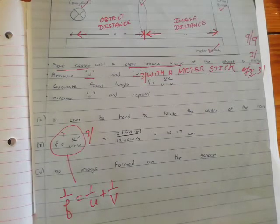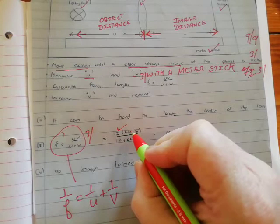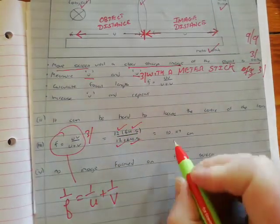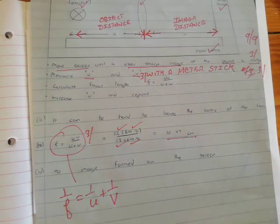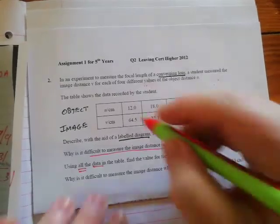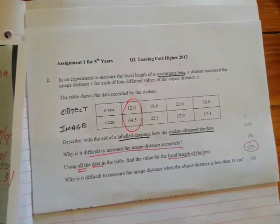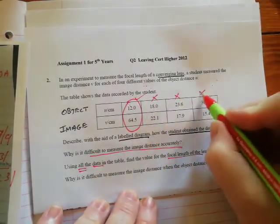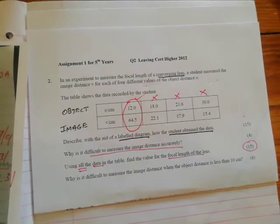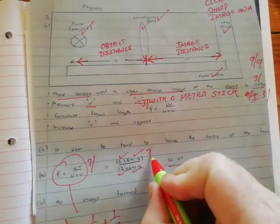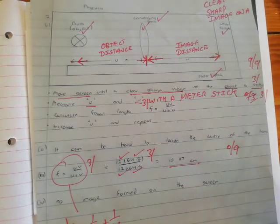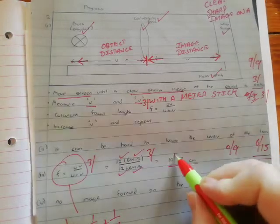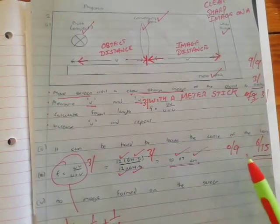Now what did the student do? Well, the student took the first object distance, the first image distance, multiplied them, added them and got an answer. But here's the problem. The student just used one set of data, got one answer. They didn't use this set, this set or this set of data. This student only did it once. So they would have got 3 marks there but would have lost 9. So they would have got a total of 6 out of 15. A lot of marks lost there. They did give a good answer with correct units but a lot of marks lost there.